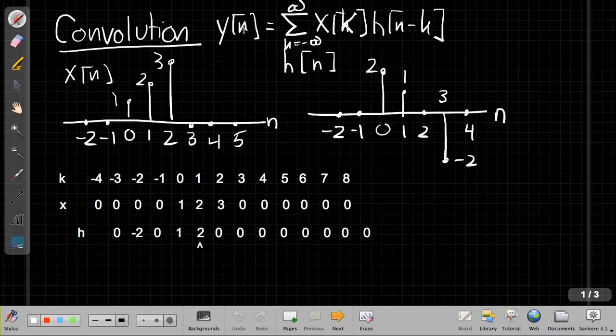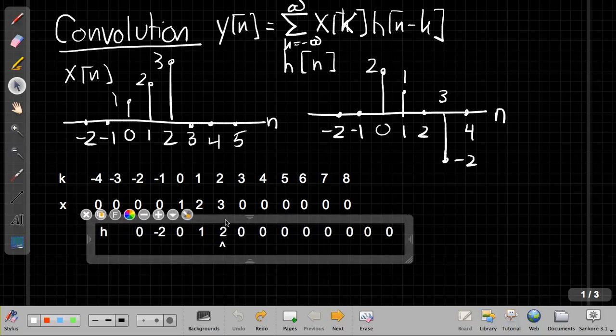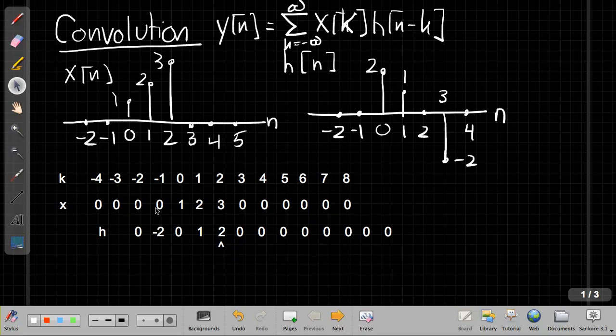If I want to find the output when n equals 2, I need h of 2 minus k. So I need to, oh, I'm drawing on it. Oops, sorry. Clean that up. Go back and get my arrow to grab it. And now I can slide it over so the arrow lines up under 2. And again go through and just do my vertical multiply add. So 0, 0, 0. 2 times 1 is 2, plus 2 times 3 is 6. So I've got 2 plus 6 is 8, and then 0 is from here on out.